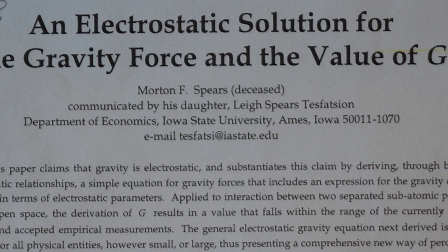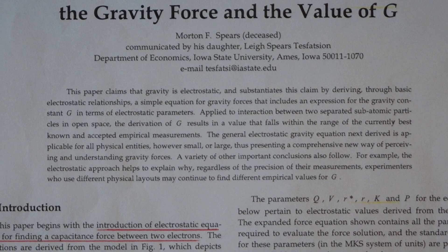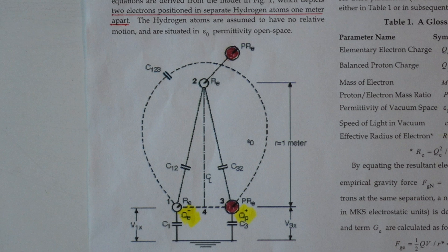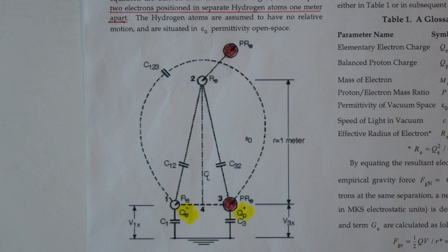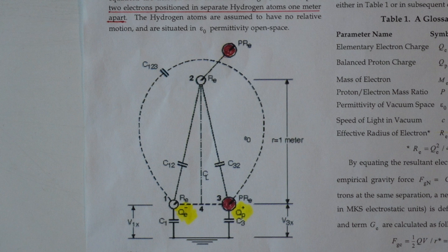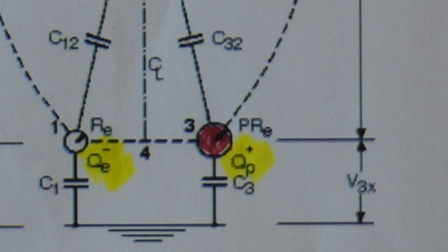Nonetheless, this is Morton Spears' paper, and I'm now going to direct you to the particular errors. Here is the diagram that Mr. Spears is using to illustrate the capacitances. What we have are two atoms of hydrogen. The protons, or nuclei of the hydrogen atoms, are the two red spheres shown there. In yellow I'm highlighting the charges on item number three, which is the hydrogen atom nucleus.